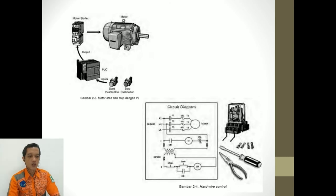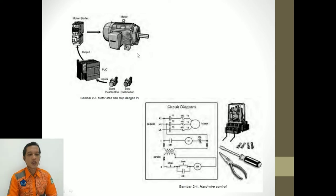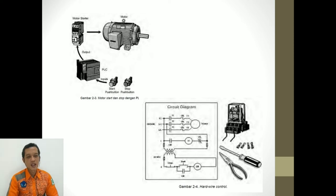Ini gambaran penggunaan PLC untuk mengoperasikan motor listrik. PLC terhubung dengan peralatan input, yaitu start dan stop push button, kemudian dihubungkan juga dengan peralatan output, ada motor starter dan motor listrik. PLC ini sebagai otak untuk sistem yang akan dikerjakan. Untuk motor 3 fase, dia tidak dihubungkan langsung ke PLC, tetapi PLC mengerjakan kontaktornya, koilnya yang dioperasikan oleh PLC untuk membuka dan menutup kontak utama kontaktor, di mana kontak utama kontaktor ini terhubung ke sumber 3 fase yang menghubungkan ke motor 3 fase. Pengawatannya cukup sederhana.